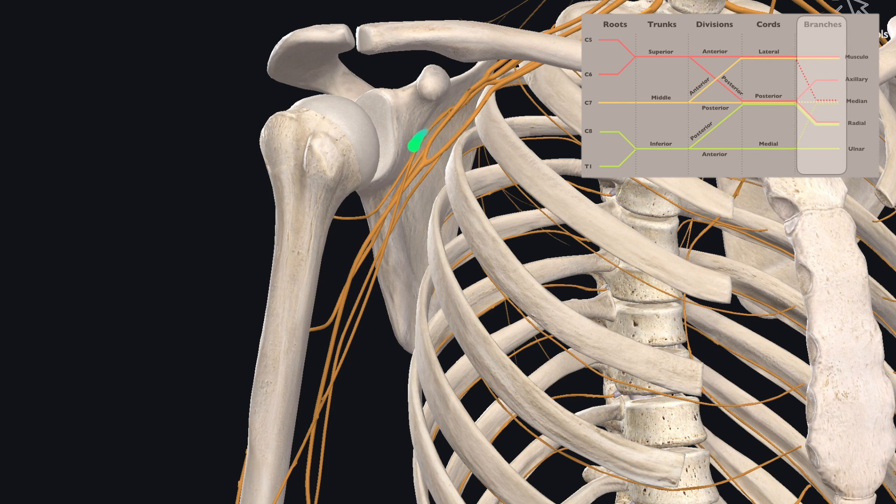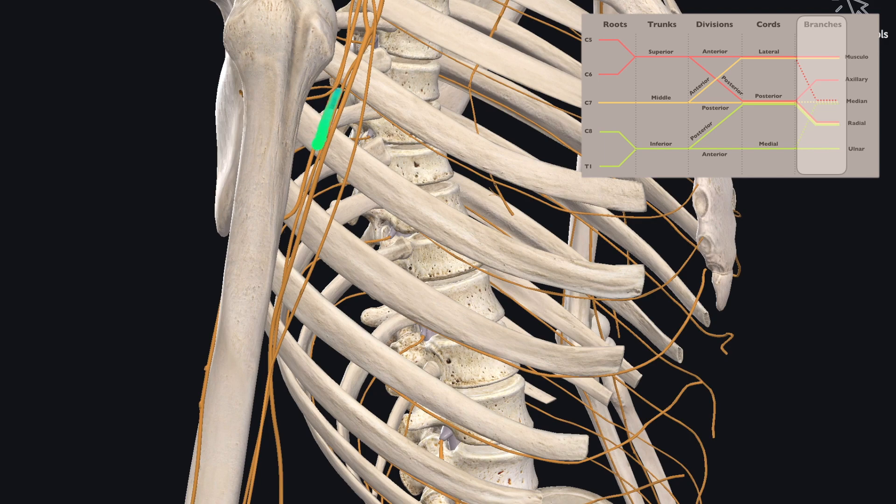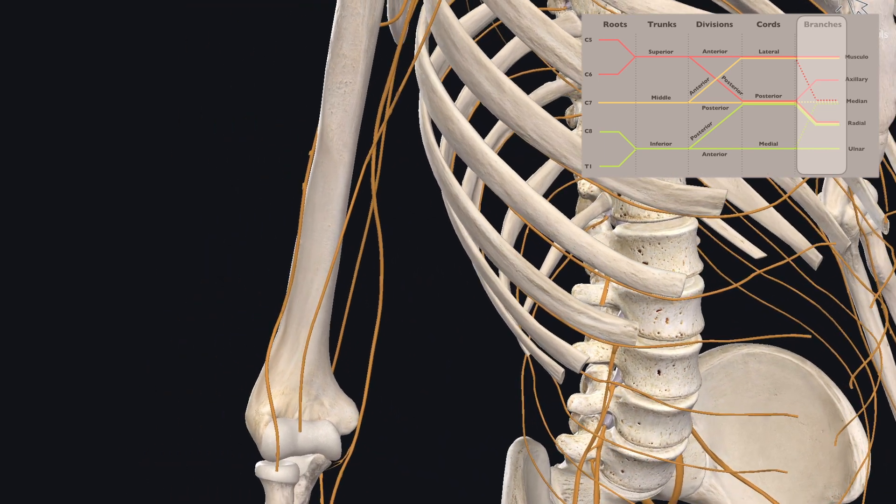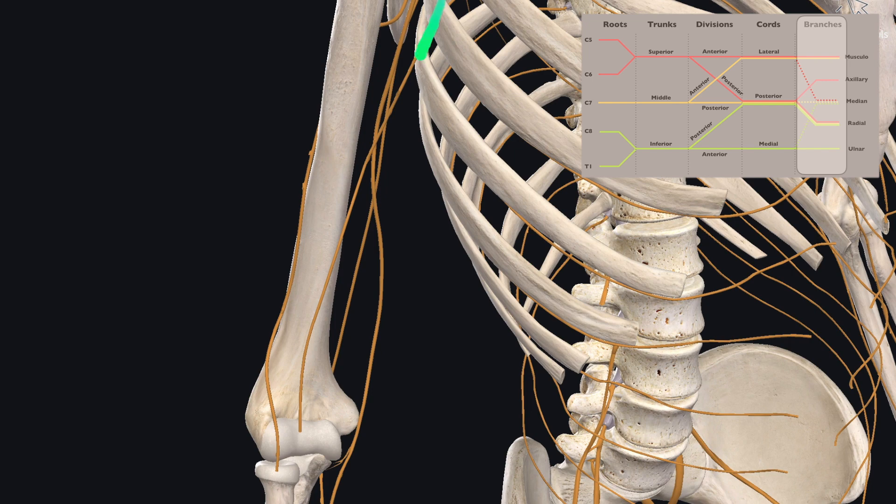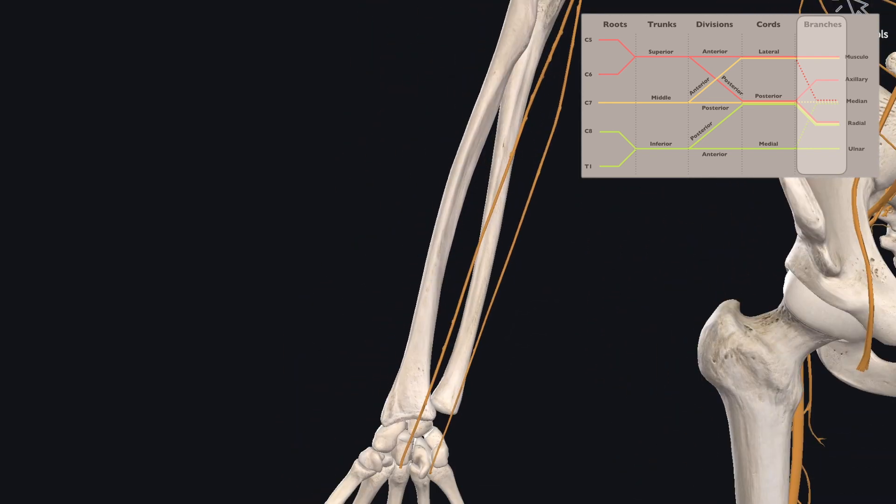And here you can see the axillary nerve is a short branch curving along the back of the shoulder. The radial nerve curves around and runs along the back of the humerus. The musculocutaneous is a relatively short branch running along the anterior aspect of the upper arm. And then finally, the median and ulnar nerve course around the medial epicondyle to reach the upper extremity.